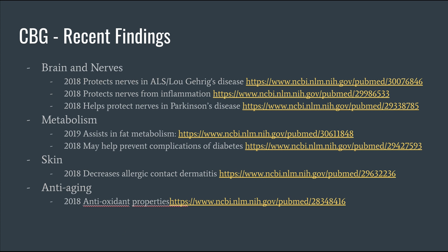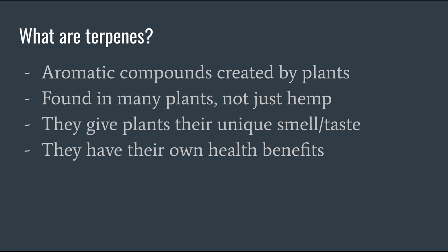In 2018, CBG really came into the spotlight in research. Cannabigerol has been shown to protect nerves in Lou Gehrig's disease and inflammatory states, as well as Parkinson's disease. A 2019 study shows it helps with fat metabolism. Another 2018 study shows it helps prevent complications of diabetes. For the skin, a 2018 study shows CBG decreases allergic contact dermatitis and has interesting antioxidant properties that promote anti-aging effects, making it a very promising wellness compound.